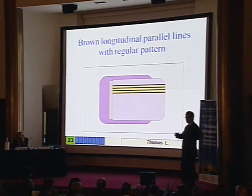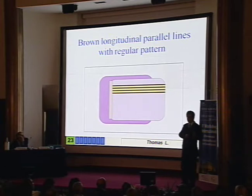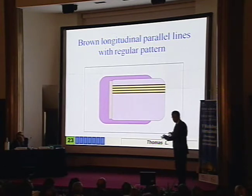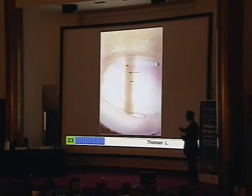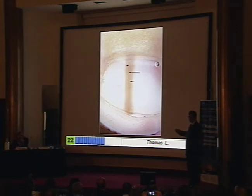Irregularity is in favor of melanoma, and regularity is in favor of nevus. So it's very simple: if the bands are regular in size, shape, coloration, and spacing, it's in favor of a nevus.